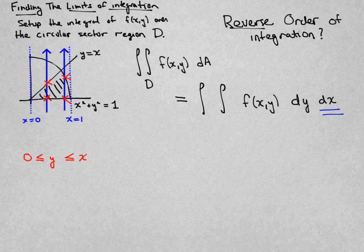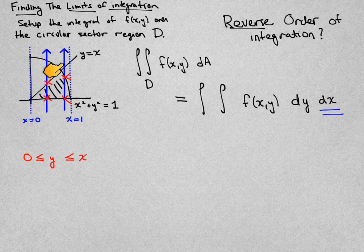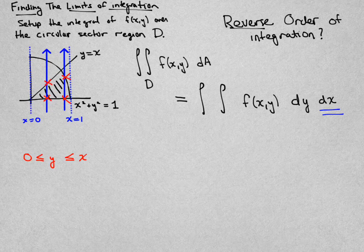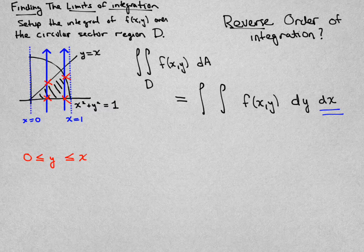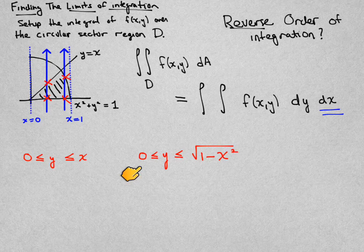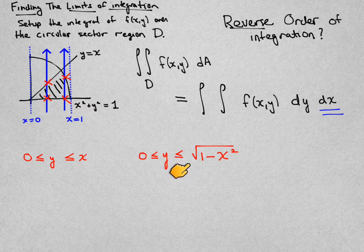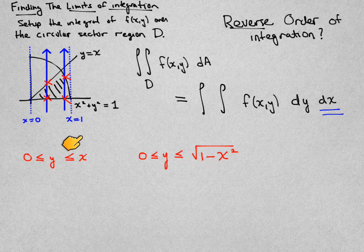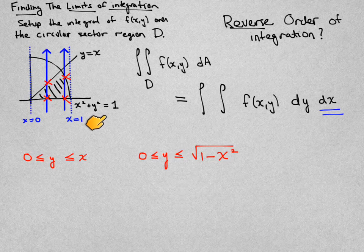However, there's another vertical slice over here where they enter at y equal to 0 and exit at the circle. And when I'm on that slice, I'm seeing my y value start at 0 and exit when y is equal to the square root of 1 minus x squared. I'm taking the unit circle equation and solving it for y.